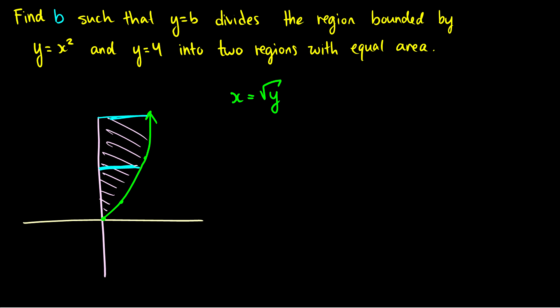So in order to solve this we need to make sure the bottom area is equal to the top area. So we can take the integral from zero to some number b of the square root of y and we can set it equal to the integral from b to 4 of the square root of y.